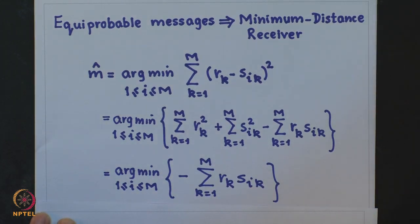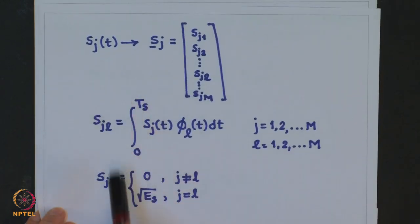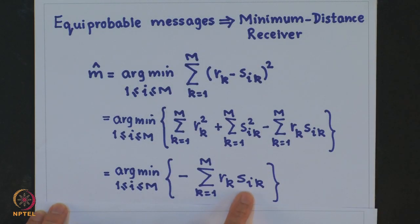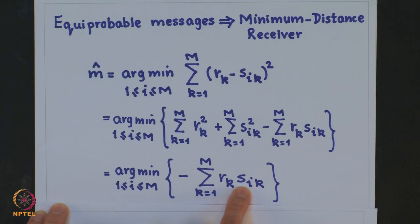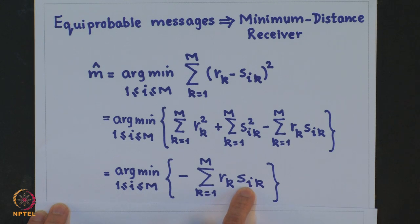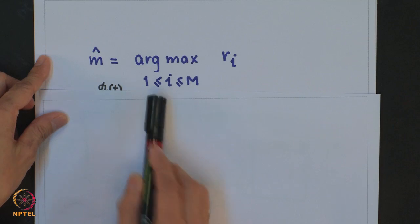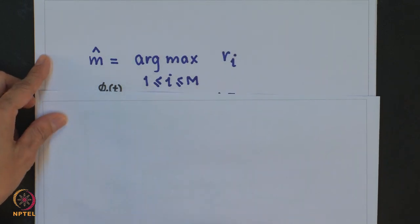Recalling that the signal components S_{ij} are nonzero only for k equal to i, the value S_{ii} equals √E_s, which is the same for all i. Therefore, the decision rule simplifies to: decide in favor of that i for which R_i is maximum.